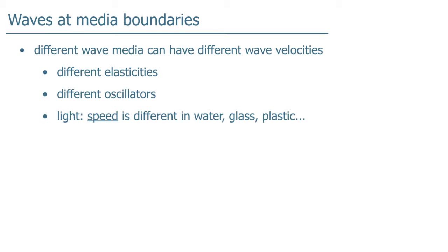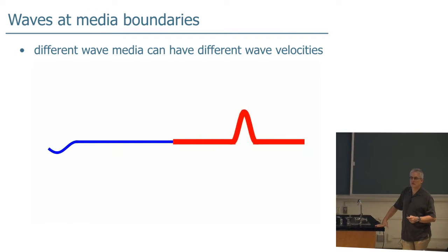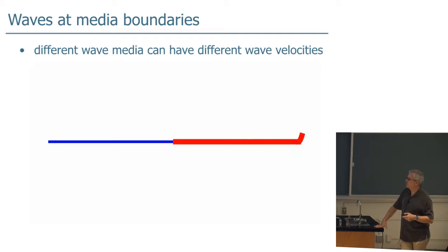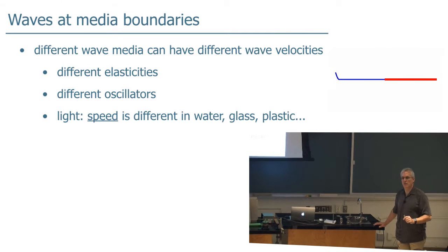Waves at media boundaries. What happens when a wave goes from one medium into a slightly changed medium? You can imagine a wave on a string or stretched spring where the density changes at a certain point. That could be because it has a different elasticity or different oscillators in the new medium. Remember that a wave ultimately depends on some sort of oscillatory behavior in a medium.